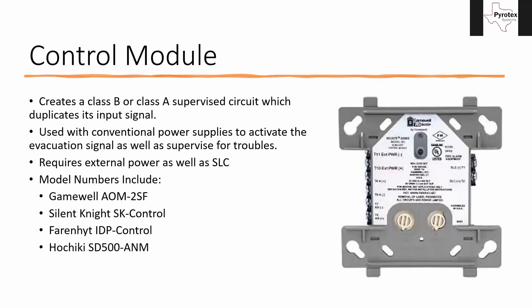A part we haven't talked about much is the control module. It looks just like the relays we've talked about, but the terminals are actually different. What it does is take some kind of external power or external speaker source and duplicate that circuit, putting it out as a Class B or Class A supervised circuit based on whatever that input is. It doesn't create any more power — it still uses the power from the original power supply or amplifier, but it adds supervision to the circuit.